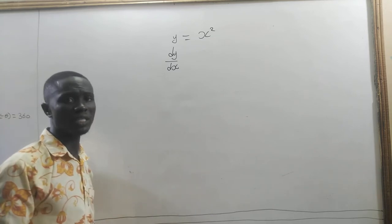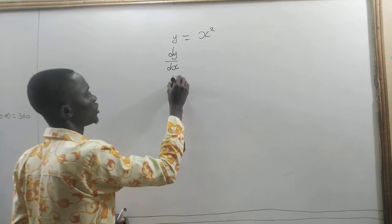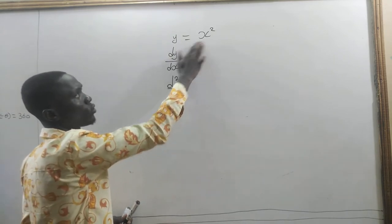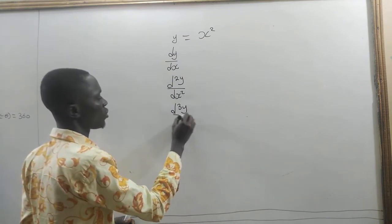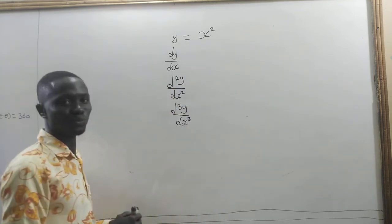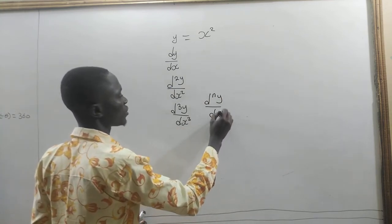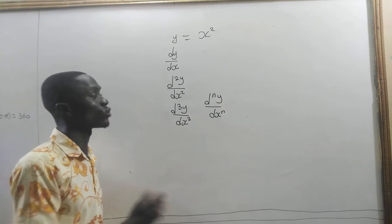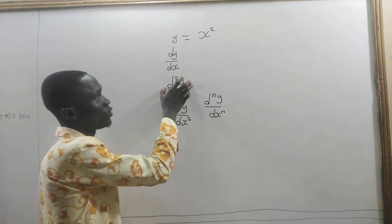Under Leibniz's notation, if you want to differentiate more than once, we write d²y/dx², which means differentiate y equal to x squared two times. If you write d³y/dx³ it means differentiate it three times. So we can say that d^n y/dx^n means we have to differentiate it n times.